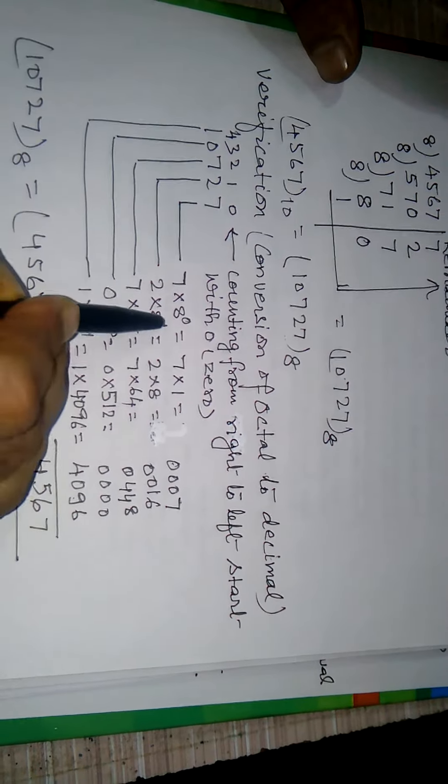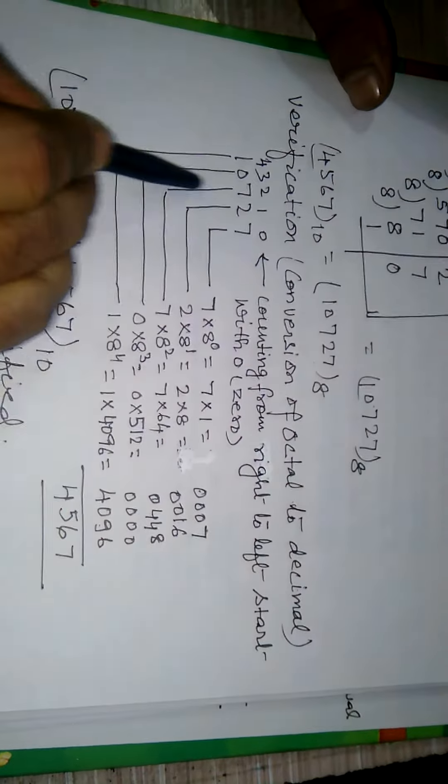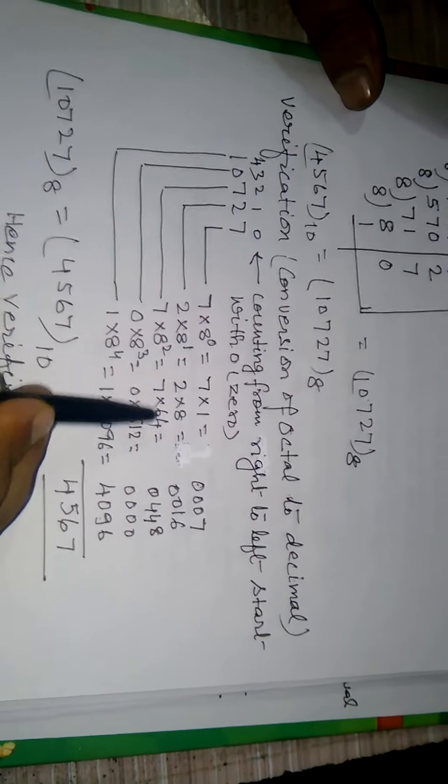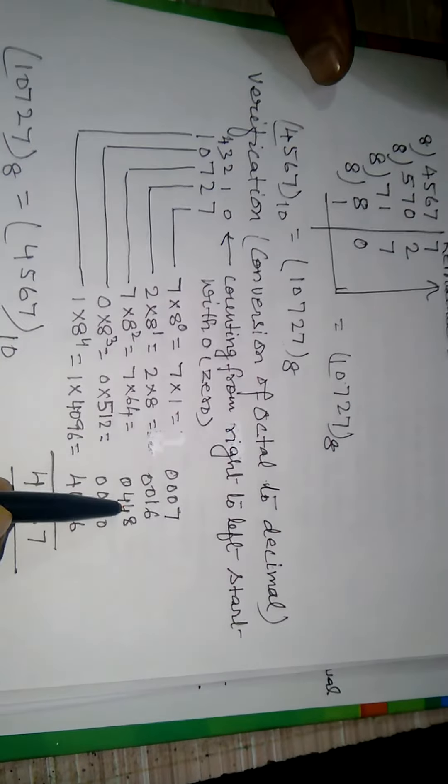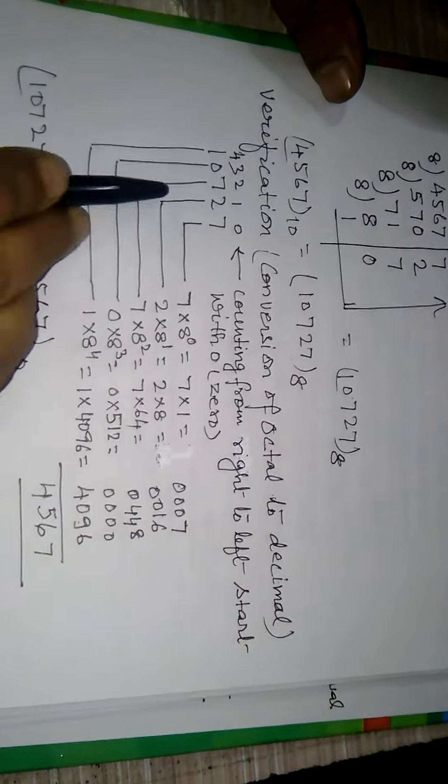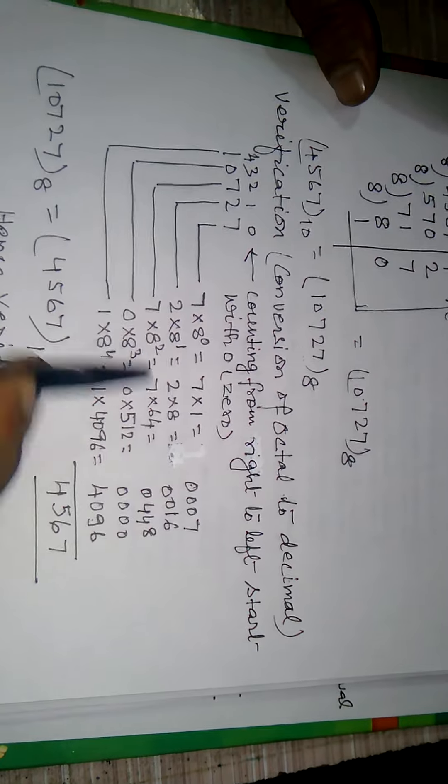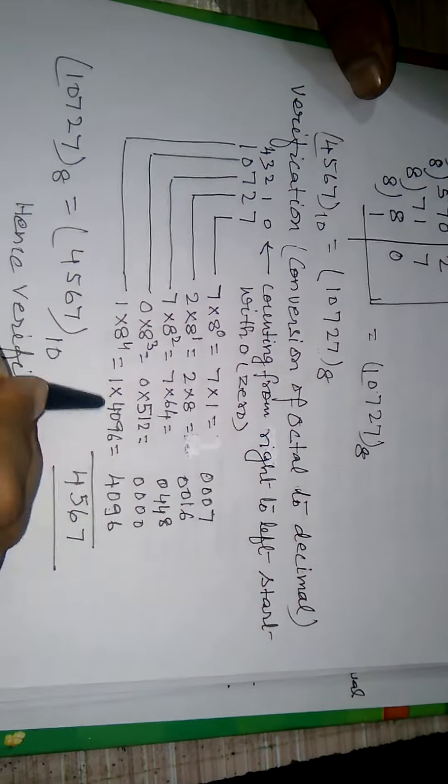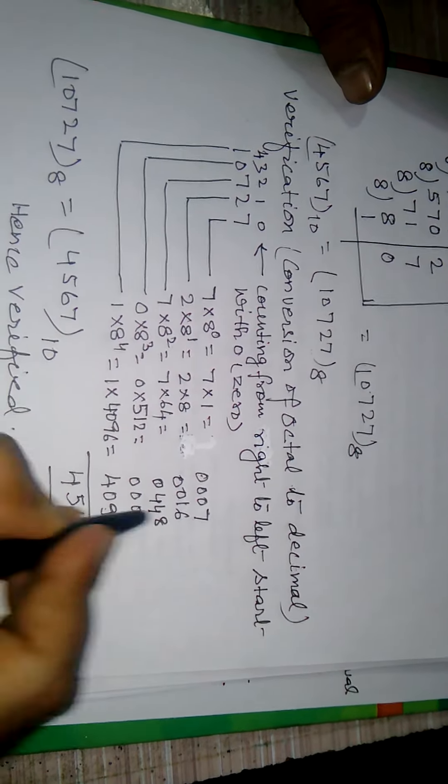2 into 8 raised to the power 1 equals to 2 into 8 that is 16. 7 into 8 to the power 2 that is 7 into 64 that is 448. Now 0 into 8 raised to the power 3 that is 0. And 1 into 8 raised to the power 4 that is 4096.